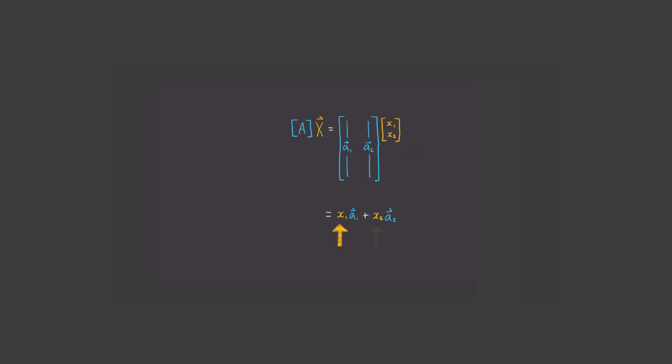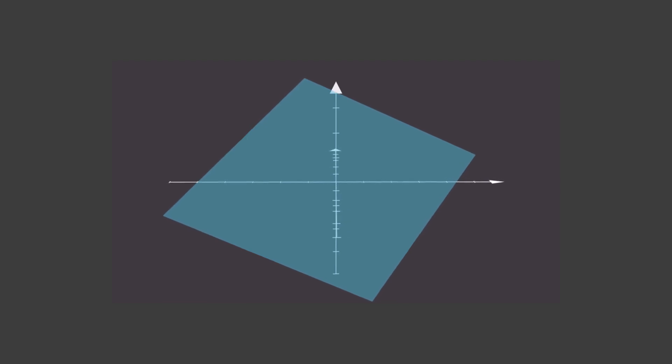And because x1 and x2 are scalars, we can see that it actually doesn't matter what the values of x1 or x2 are. The result will always land on a plane parallel to the vectors a1 and a2. And so this means that the vectors a1 and a2 span this plane that I'm showing here.